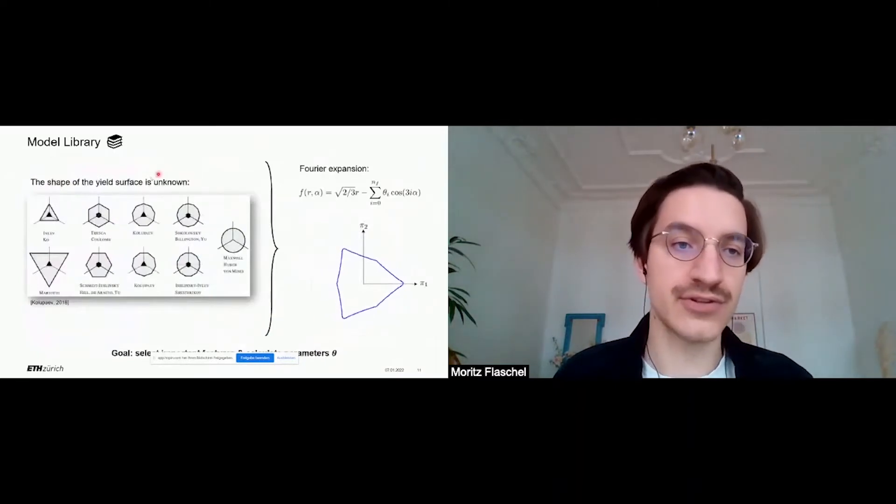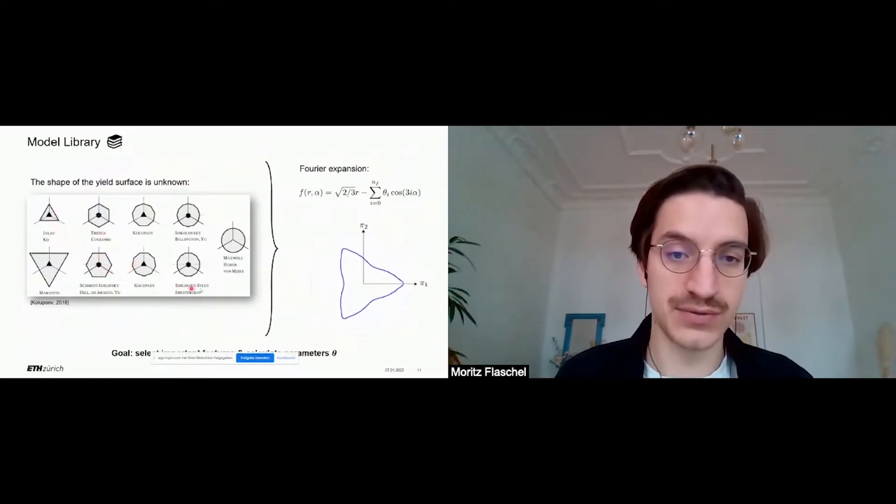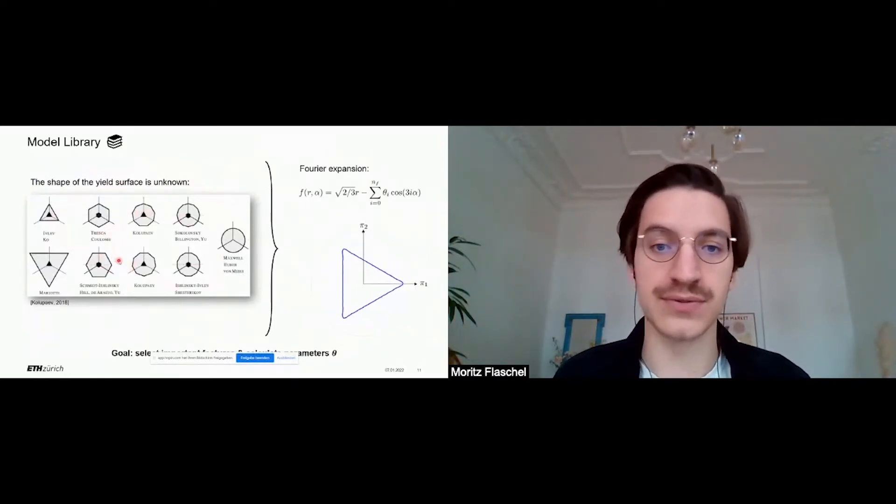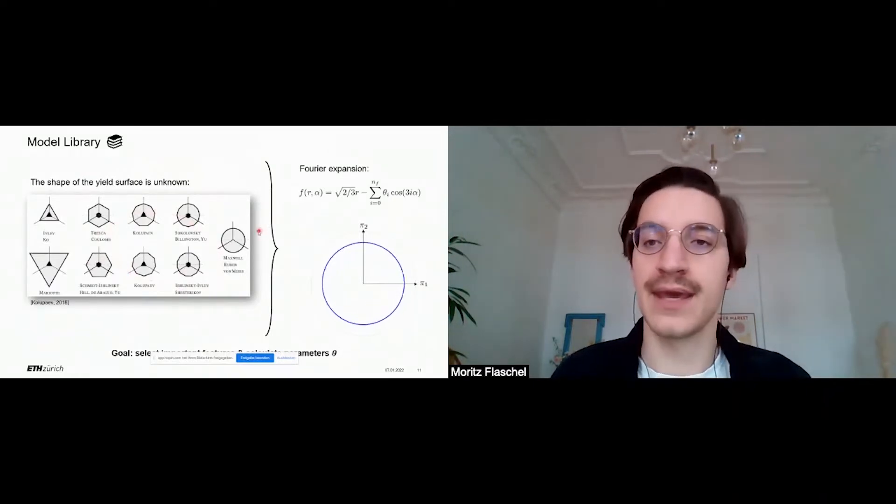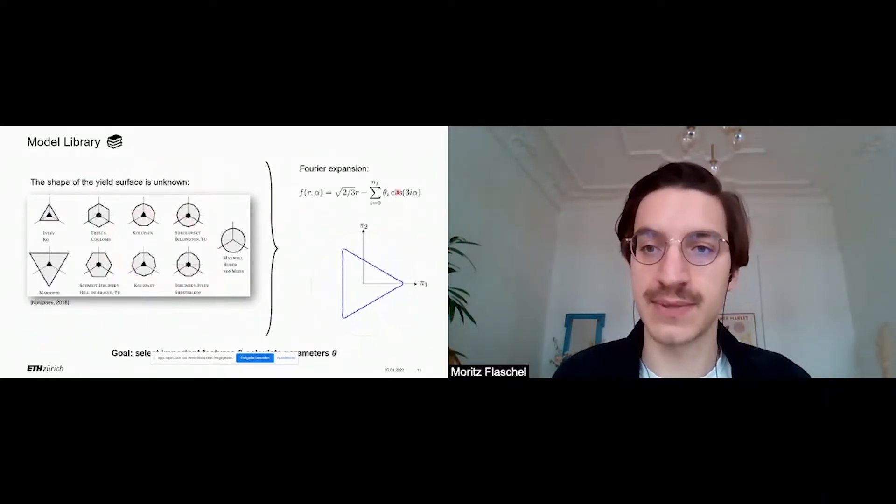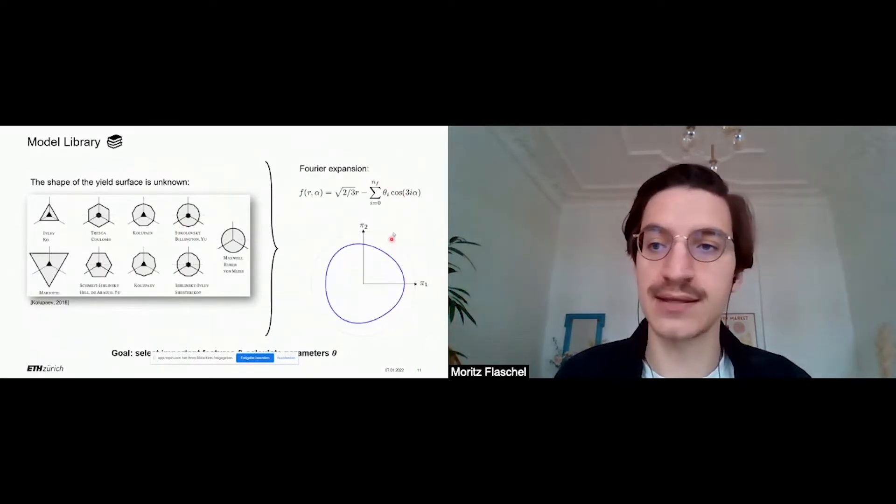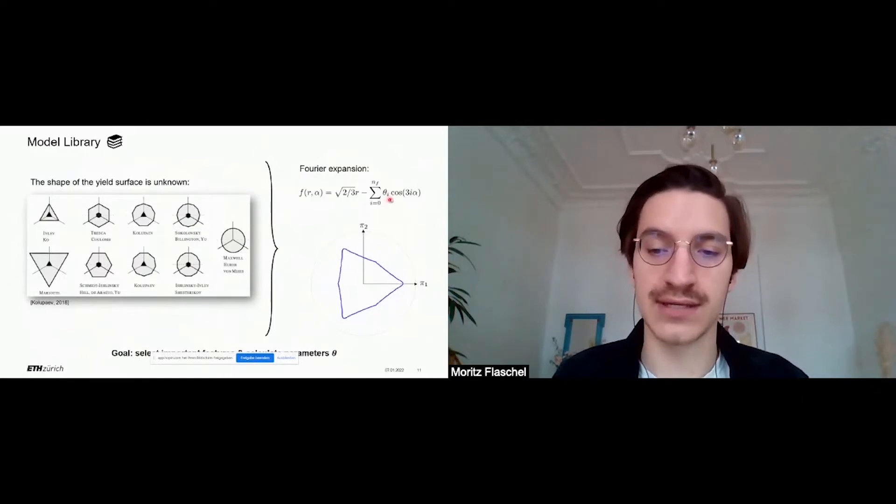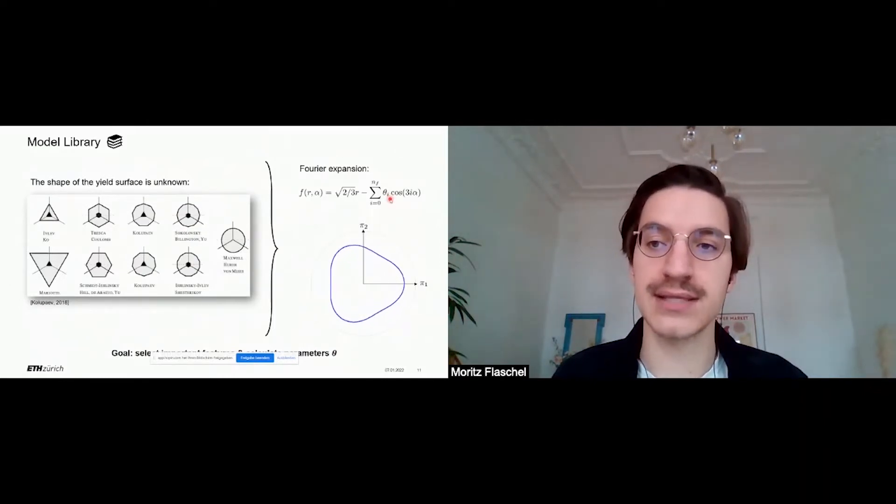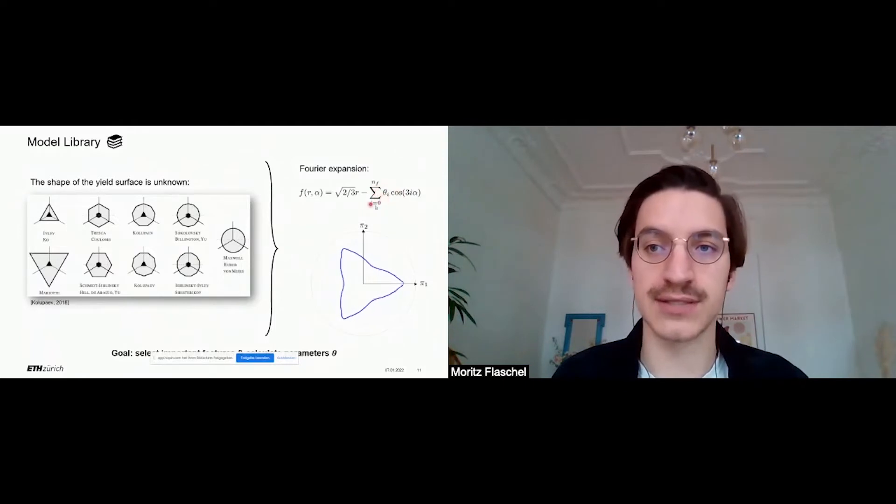The literature reports a variety of different yield surface shapes. However, we do not want to assume any specific shape a priori, but we want the algorithm to find out the shape. Therefore, we introduce the Fourier expansion of the yield surface such that we can describe arbitrarily shaped yield surfaces. And again, the goal is not only to calculate the unknown parameters in our ansatz, but also to select which modes in this Fourier expansion are really important to describe the data.